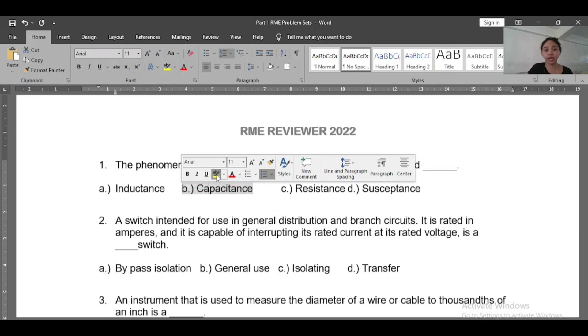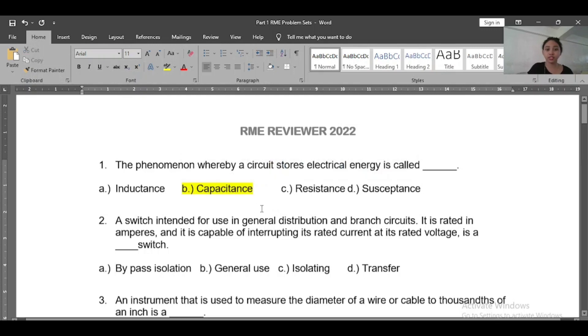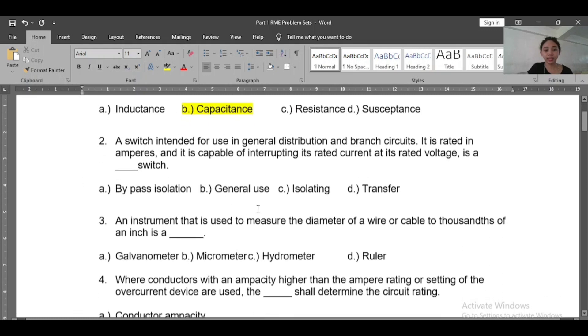And then we have number two: A switch intended for use in general distribution and branch circuit. It is rated in amperes and is capable of interrupting its rated current at its rated voltage, is a blank switch. So the answer is A, general use switch.